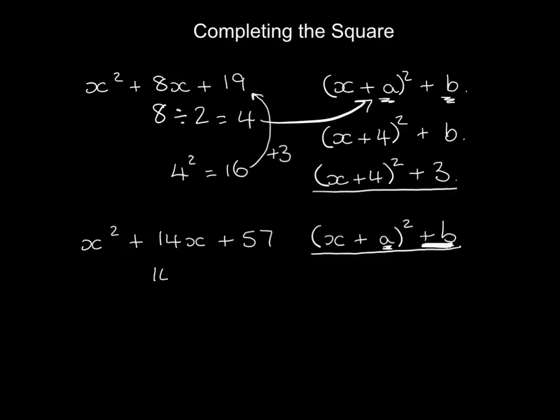What you'll do is do 14 divided by 2 which is 7. That number goes in there. So it's going to be x plus 7 squared and then something else. We'll leave that blank.